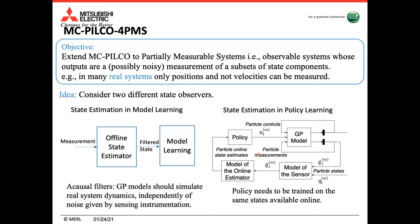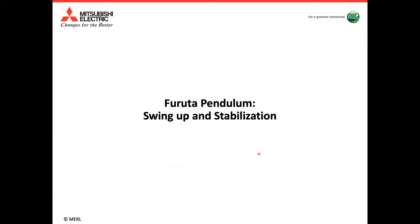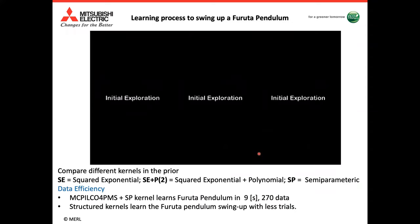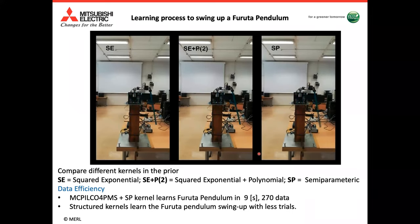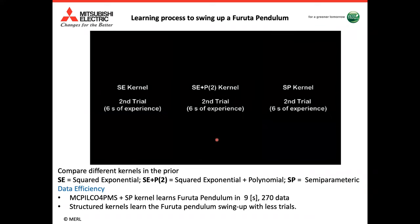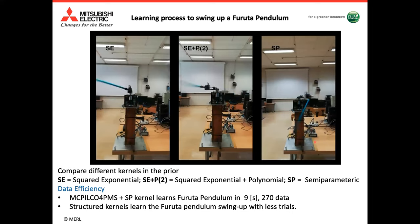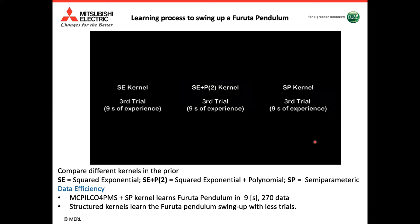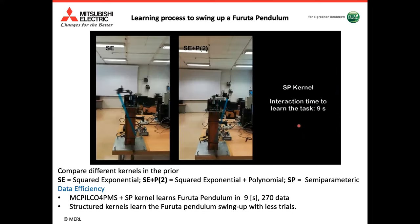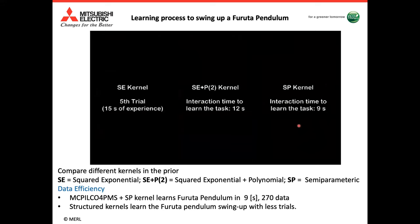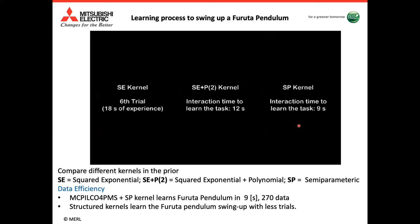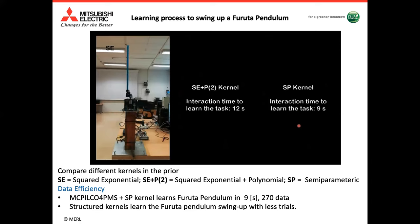First, we learn to control a Furuta pendulum. In these three videos, we show MCPILCO for partially measurable systems learning to control the Furuta pendulum with different kernels: a squared exponential kernel, a squared exponential with polynomial kernel, and a semi-parametric kernel that uses information from the physics. MCPILCO with the semi-parametric kernel can learn the Furuta pendulum in only nine seconds of interaction with the system — less than 300 data points — demonstrating both the efficiency of our algorithm and the advantage of choosing any kernel function.